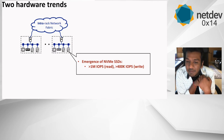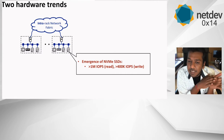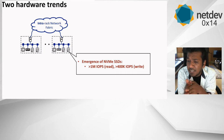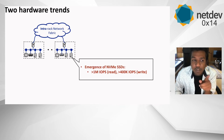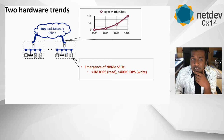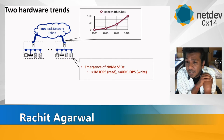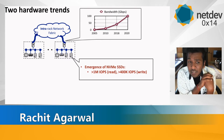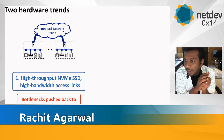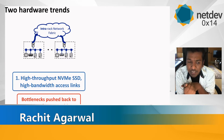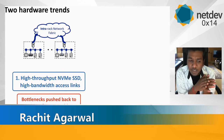The first trend is that we have really fast non-volatile memory solid-state drives that can now support as many as one million IOPS for reads and almost 400K IOPS for writes. On the other hand, we're seeing a continuous increase in network bandwidth — a lot of data center providers are already deploying 100Gbps links. Since these SSDs and links have gotten much faster, the bottlenecks have been pushed back to the software stack.